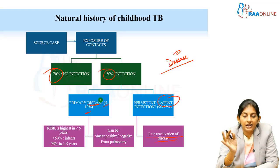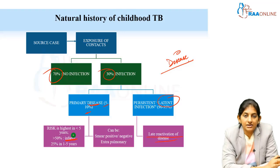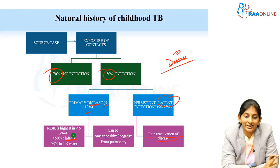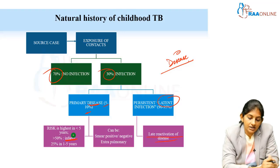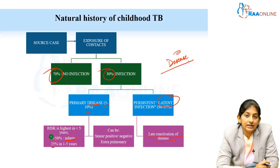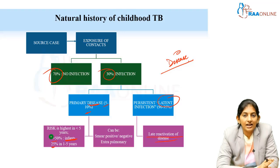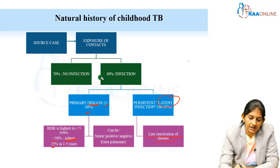Once they acquire this primary disease, it is dependent on age. Less than 5 years are the highest risk group. Among infants, 50 percent will get the infection, and among children less than 5 years, 25 percent will get the infection — so the infection rate increases with younger age. This primary disease can be pulmonary TB, extra-pulmonary TB, smear positive, or smear negative.